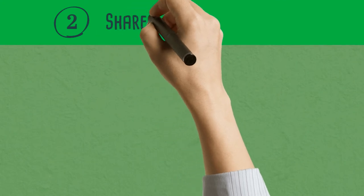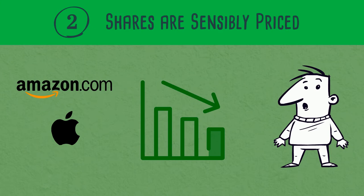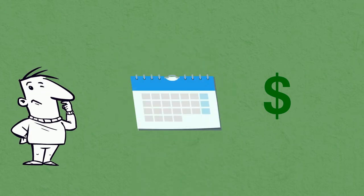Number 2: Shares Are Sensibly Priced. The best businesses in the world can be the worst investments if the price point isn't right. Price is so important as it can determine whether you will make a profit or loss from your investment, especially if you are investing for the long run.